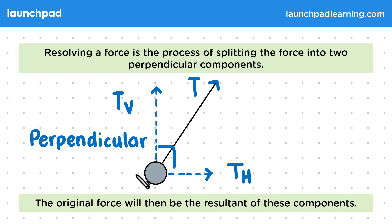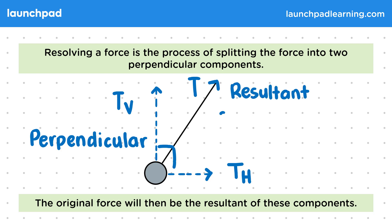The original force will then be the resultant of these components. So T is the resultant of Tv and Th, meaning these components combine to have an effect equal to the tension. But how exactly can we resolve forces into components?